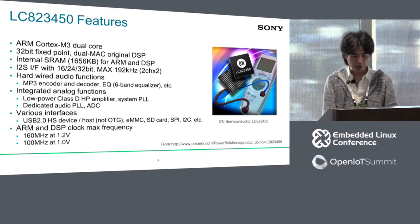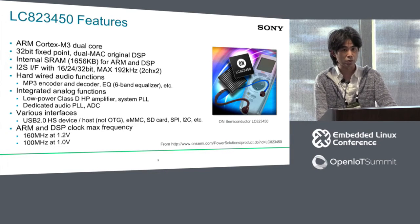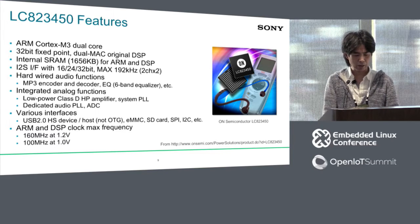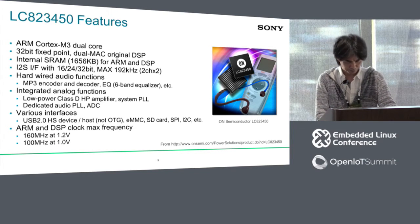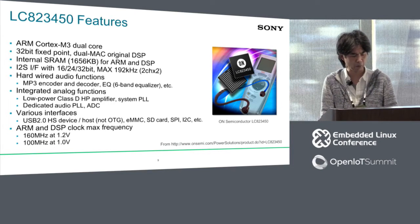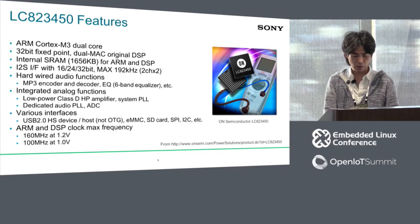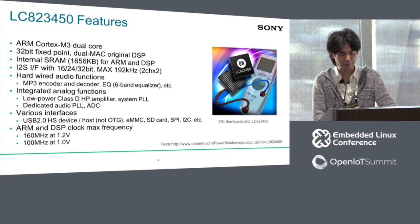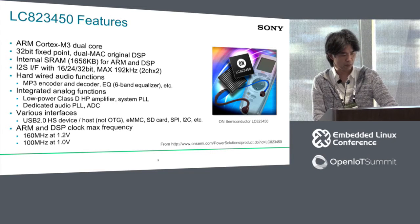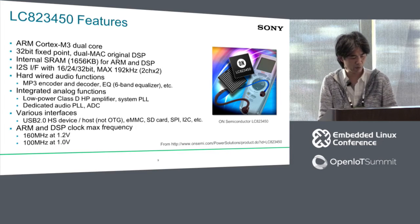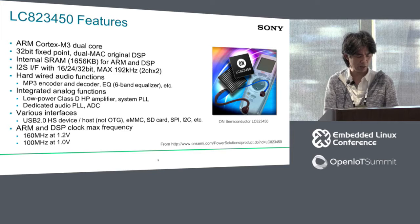The next slide shows features of the On Semiconductor LC823450, which we use in our products. The microcontroller has a Cortex-M3 dual core, but currently only single core is used. It also has a DSP — 32-bit fixed-point dual MAC DSP — and internal SRAM with slightly larger capacity than a typical microcontroller. It supports high-resolution audio up to 192K 32-bit. In addition, it has hardware logic such as MP3 encoder and decoder to reduce power consumption. It supports standard peripherals like USB, SPI, and I2C, and can operate at two different voltages — 1.2V and 1.0V — depending on actual speed.